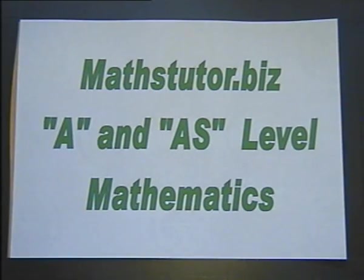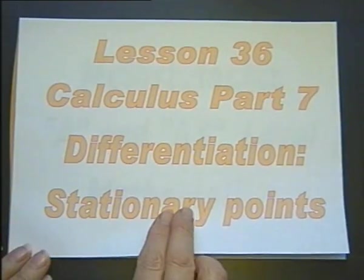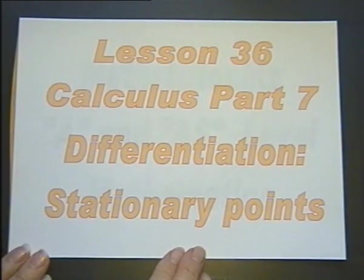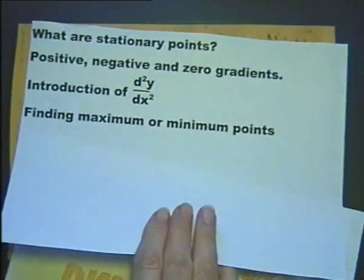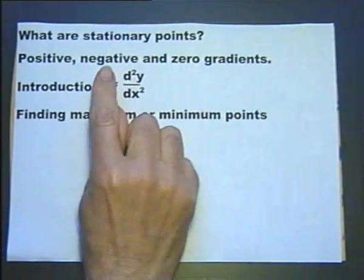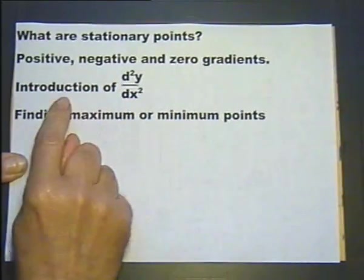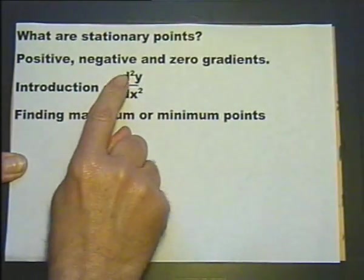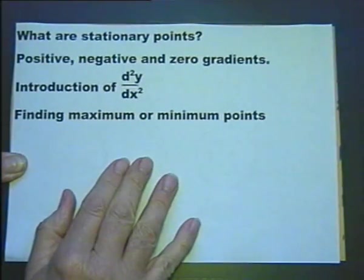A and AS level mathematics, Lesson 36, Calculus Part 7. Differentiation, looking at stationary points. In this lesson we're going to look into what are stationary points, positive, negative and zero gradients, the introduction of d²y/dx² and finding maximum or minimum points.